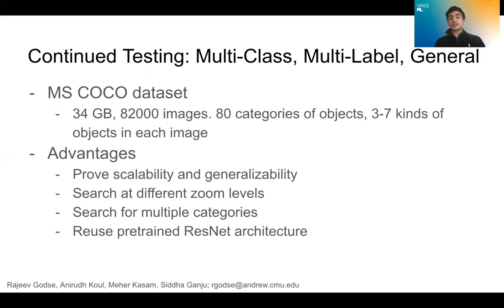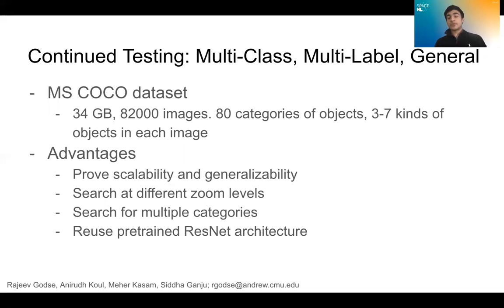We had a generic performance benefit for satellite images, but we needed to show we could solve for the problems of multi-class multi-label datasets. We needed a large multi-class multi-label dataset that had labels to validate our results. I chose the MS COCO dataset — 34 gigabytes of data, 80,000 images, 80 distinct categories with three to seven types of objects normally in the same image. This allowed us to prove both scalability and whether we can solve for multi-class multi-label problems.